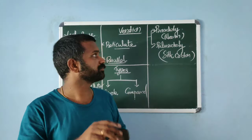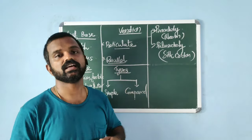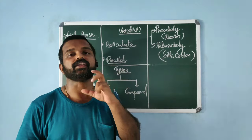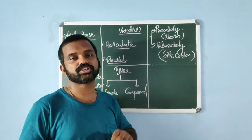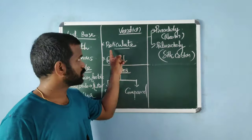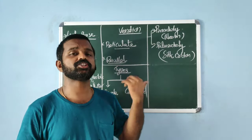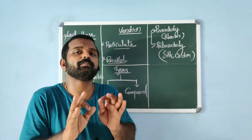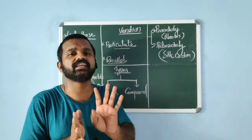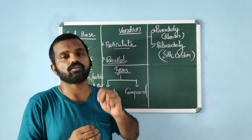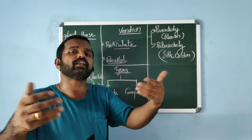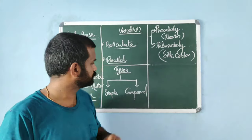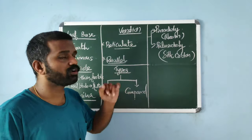Venation is the arrangement of veins on the lamina. There are two types: reticulate venation, where veins are branched to form a network — seen in dicots; and parallel venation, where veins are parallel to each other — seen in monocots.